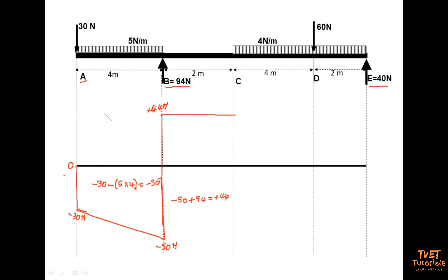Between C and D there is a UDL. The scale is 4 newtons per meter and the distribution is 4 meters — not 6 meters, because the 6 meters moves from C to E; I'm only looking at the distribution from C to D. I subtract 4 four times. I calculate: 44 minus 4 times 4 equals 44 minus 16, giving 28 newtons. I draw a slope line from 44 down to 28 at point D, labeling that corner 28 newtons.